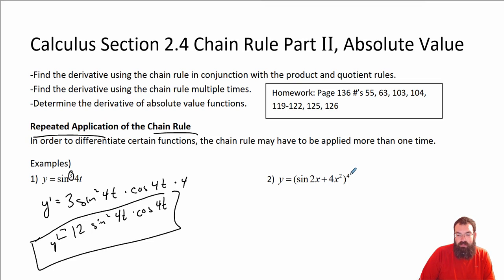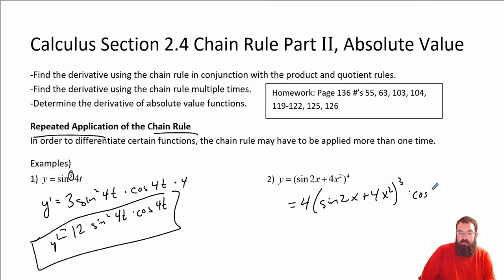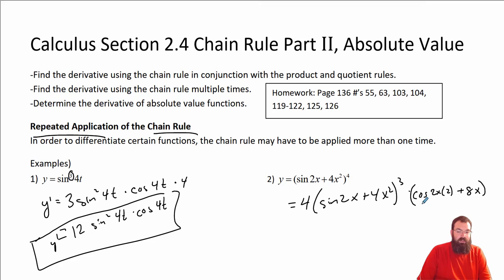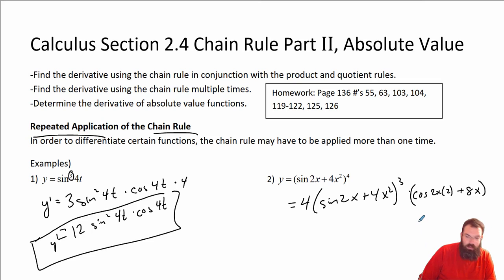This one here — the outside is the 4, so this is 4 times all of the garbage that's on the inside to the third, times the derivative of the inside, which is cosine of 2x times 2, because I've got to do that chain as well, plus 8x. That is what the inside derivative is, and that's what the outside is. It's a crazy looking one but that's your answer — I'm going to leave it that way.